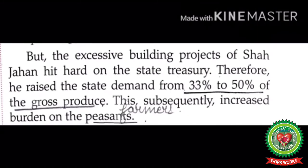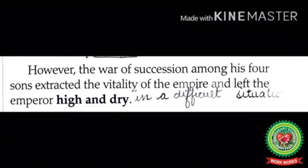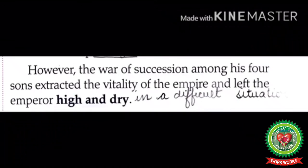However, the excessive building projects of Shah Jahan hit hard on the state treasury — meaning wealth. Therefore, he raised the state demand from 33% to 50% of the gross produce, which increased the burden on the peasants — meaning farmers. The war of succession among his four sons extracted the vitality — meaning strength — of the empire and left the emperor high and dry, meaning in a difficult situation regarding who would be the next successor.